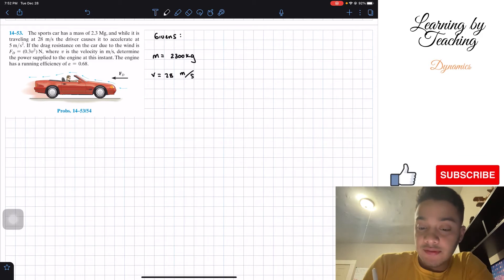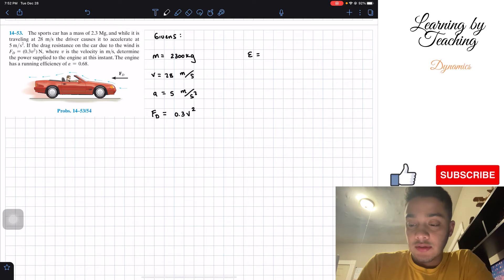We're giving the acceleration, which is equal to 5 meters per second squared. We're giving the force of the drag, the dragging force is equal to 0.3 times the velocity squared. We're also giving the efficiency of this engine of 0.68.